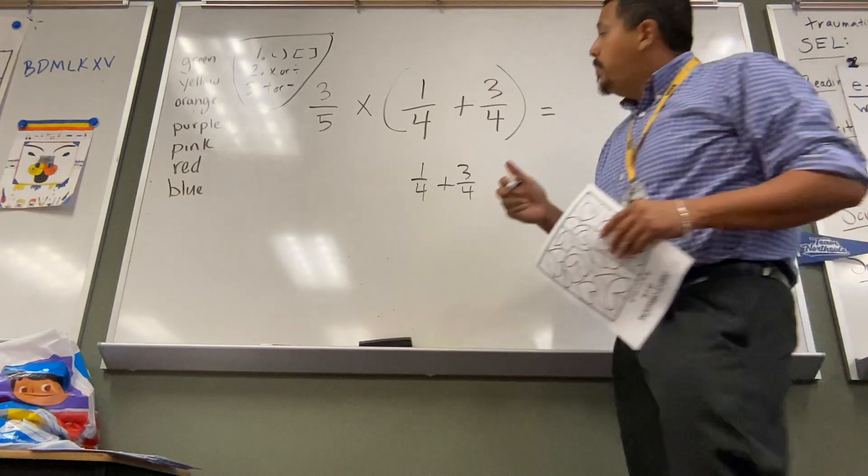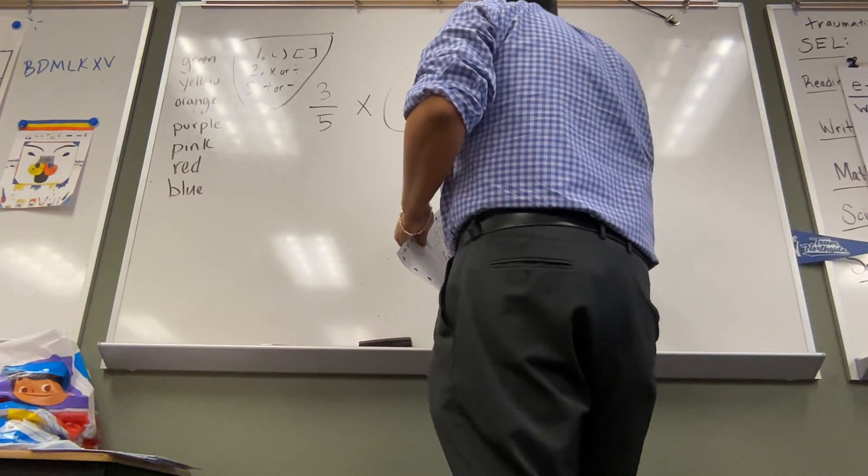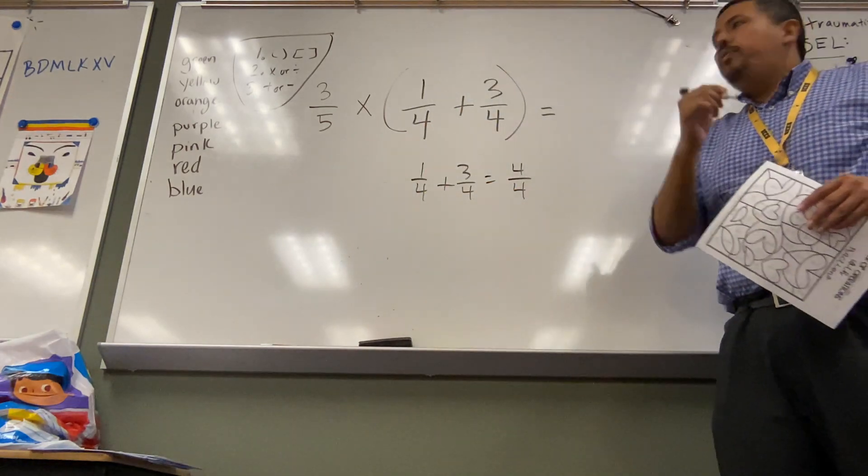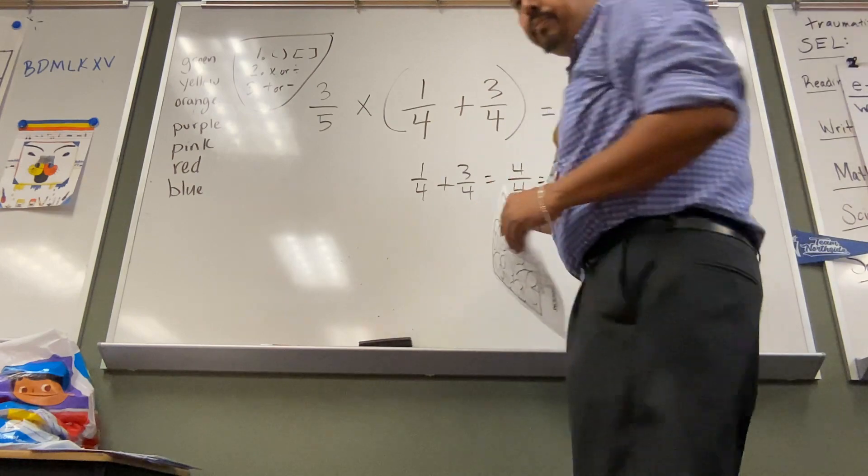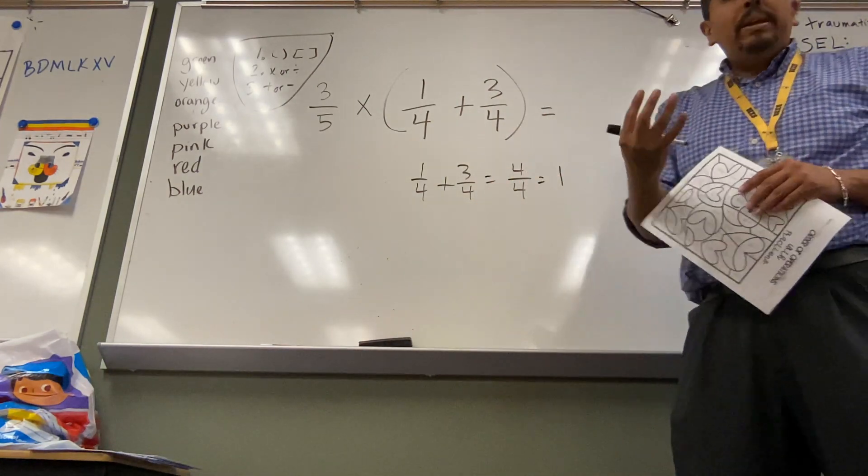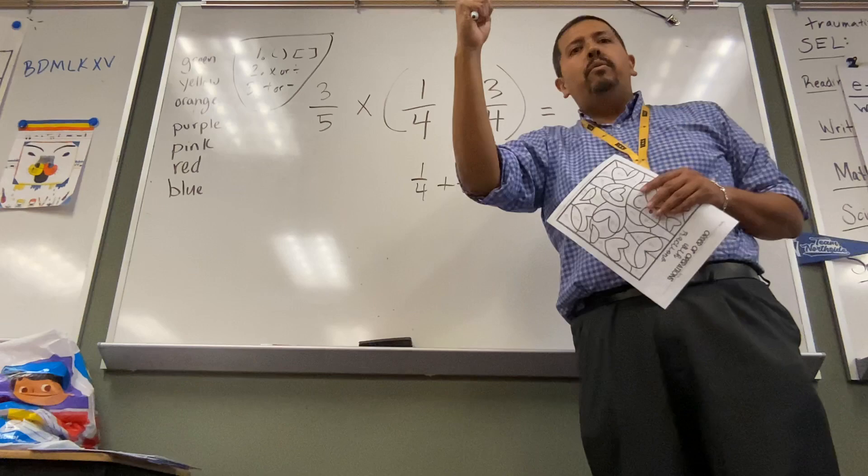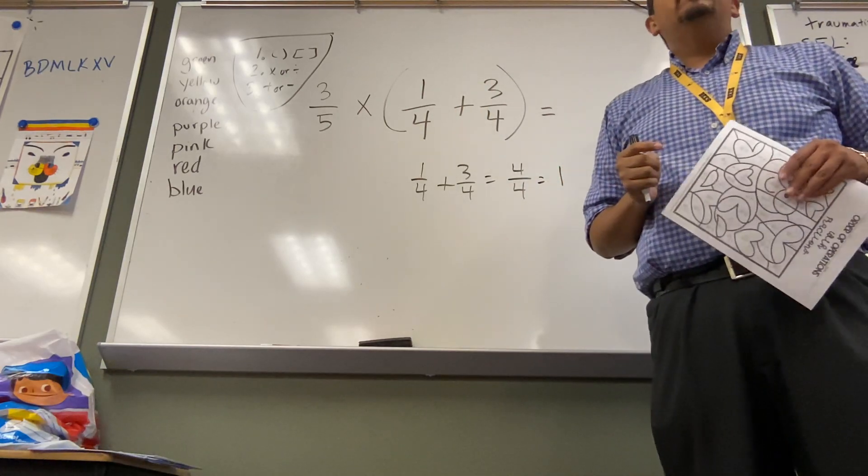So one-fourth plus three-fourths, that's going to be four-fourths, right? Four-fourths equals one whole, right? So this really simplifies to one. If I need four pieces and I have four pieces, I have one. Does that make sense?